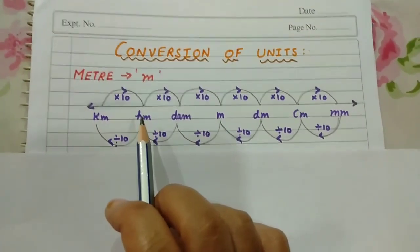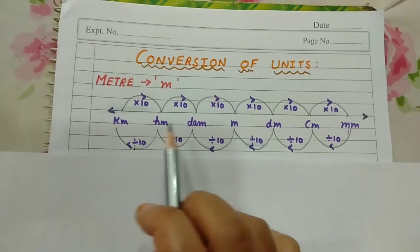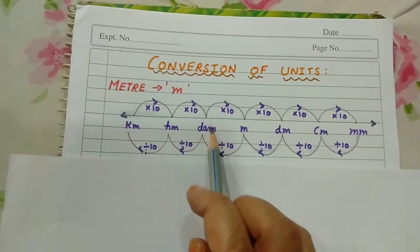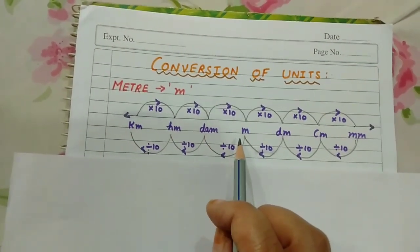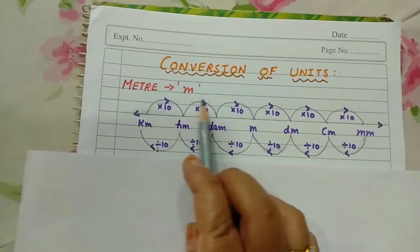We can see the basic rule is that to convert a bigger unit into a smaller unit, we multiply the bigger unit by 10 in each step.